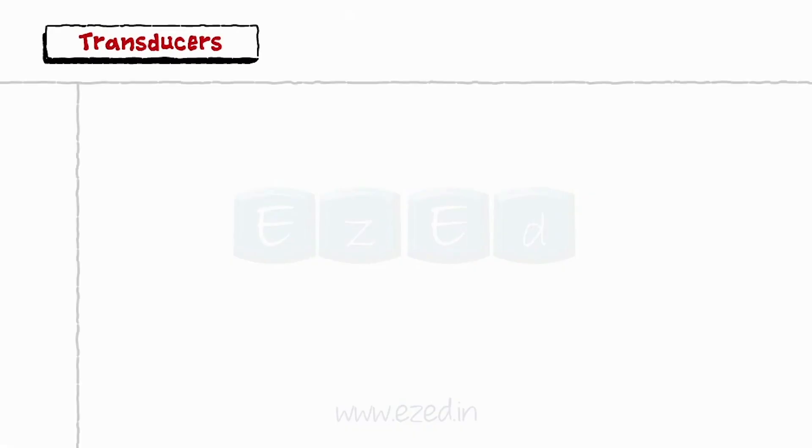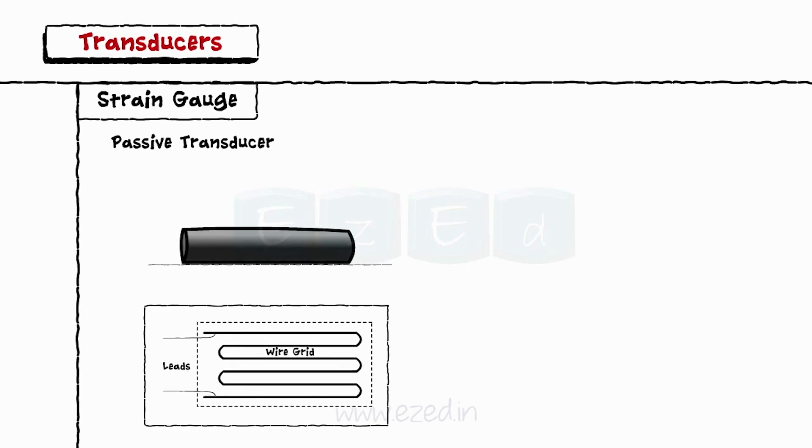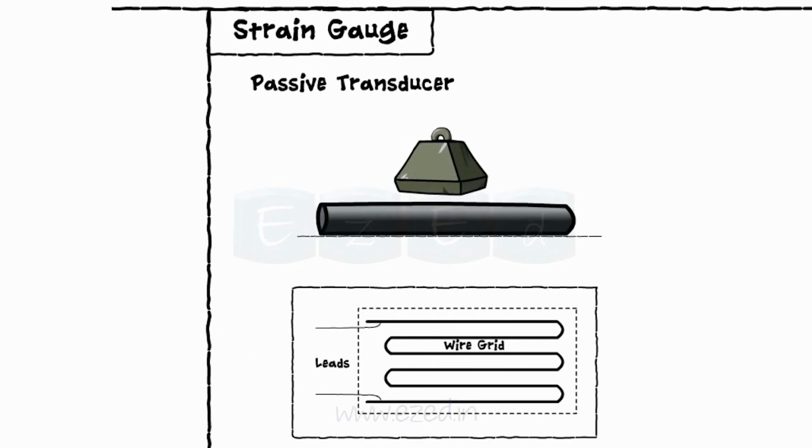The next transducer that we will study is strain gauge. A strain gauge is a passive transducer which converts the mechanical elongation and compression into the resistance change.